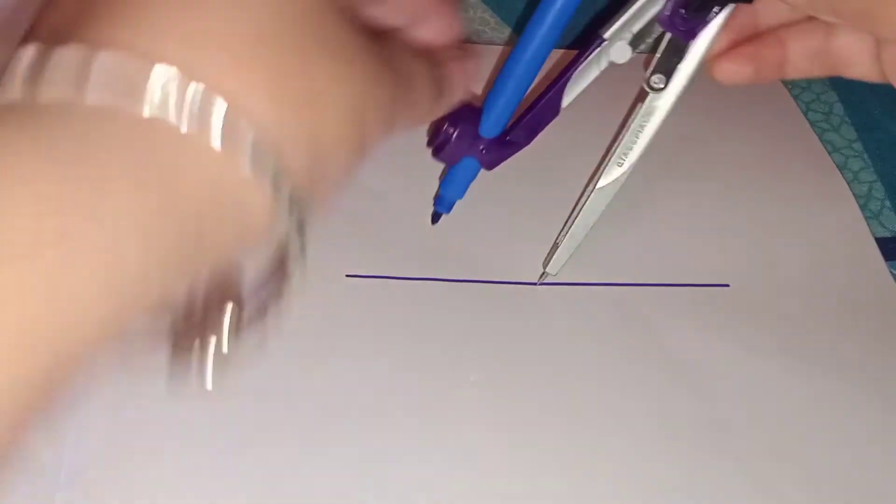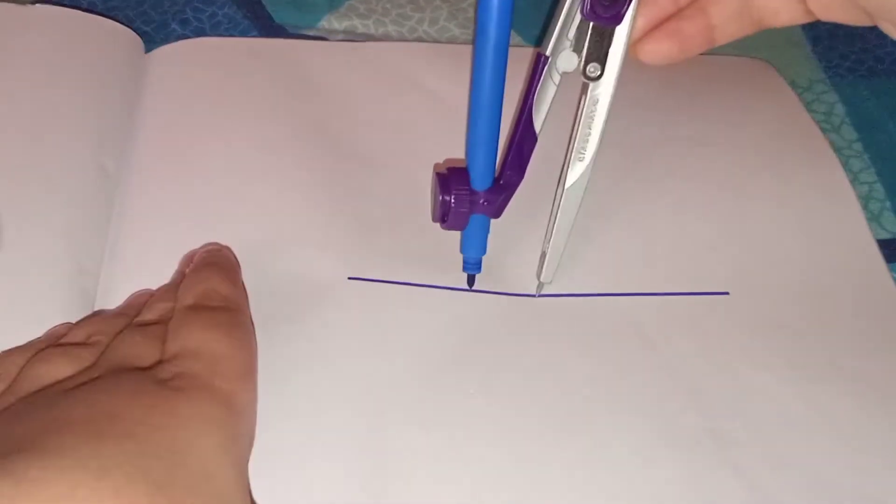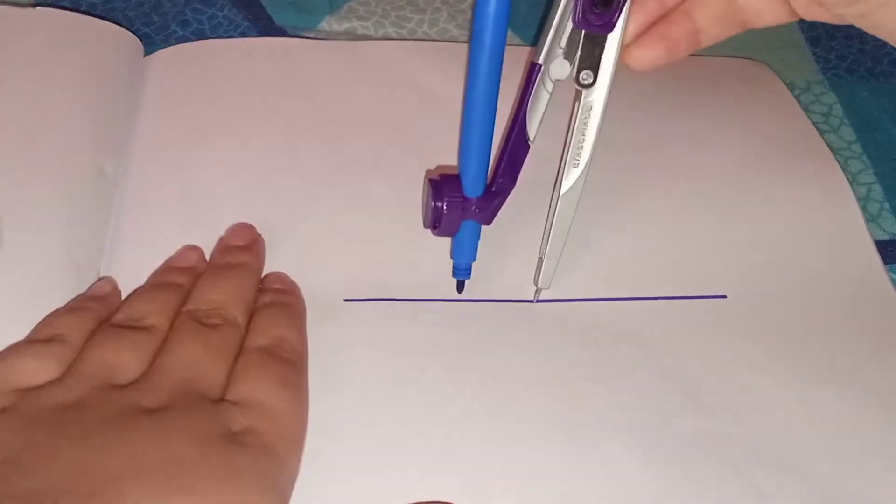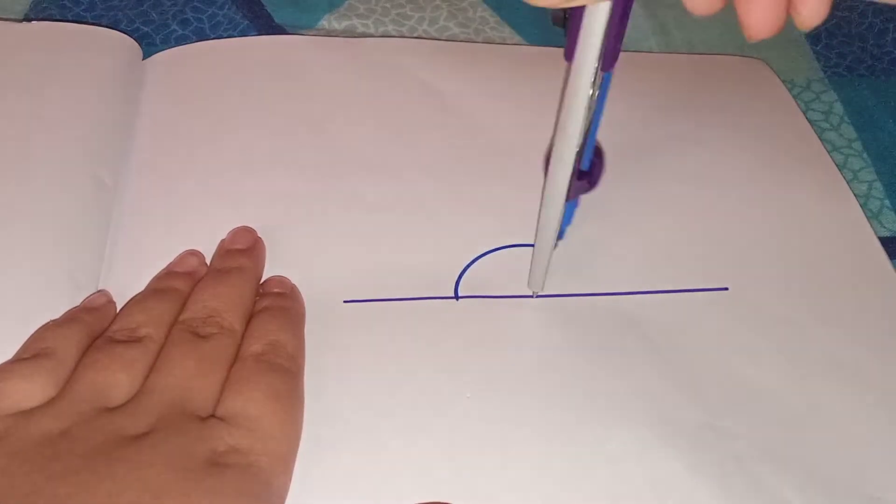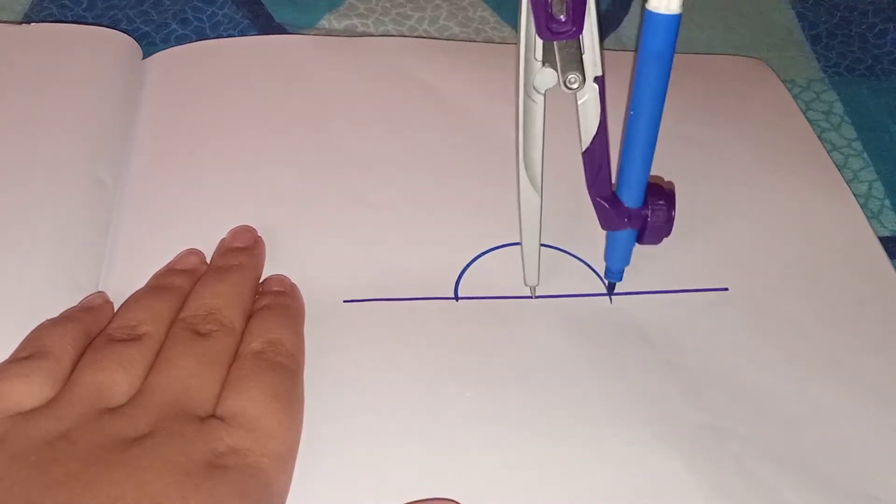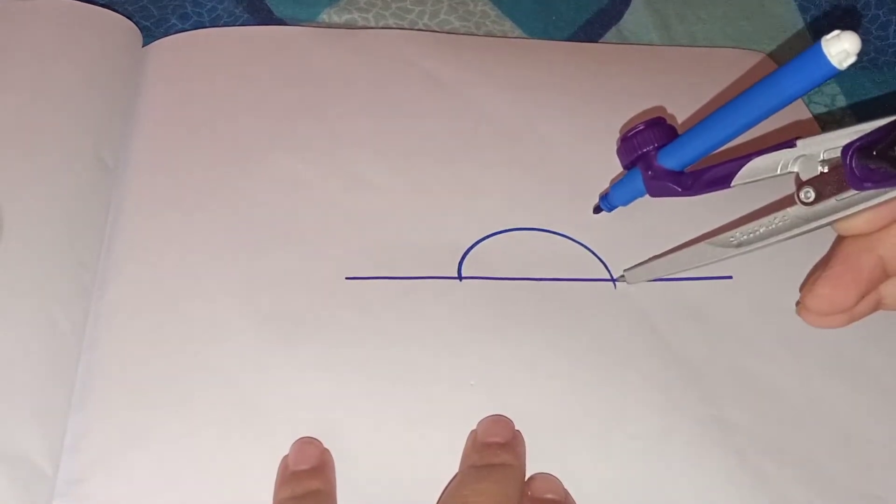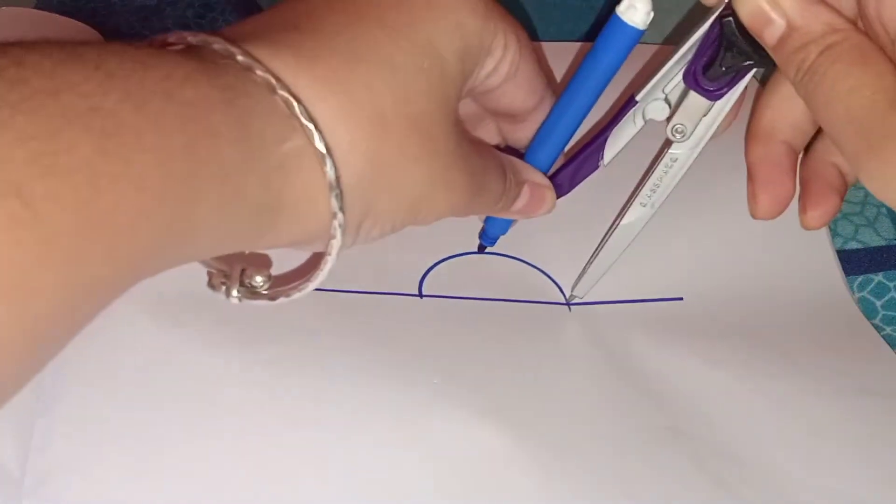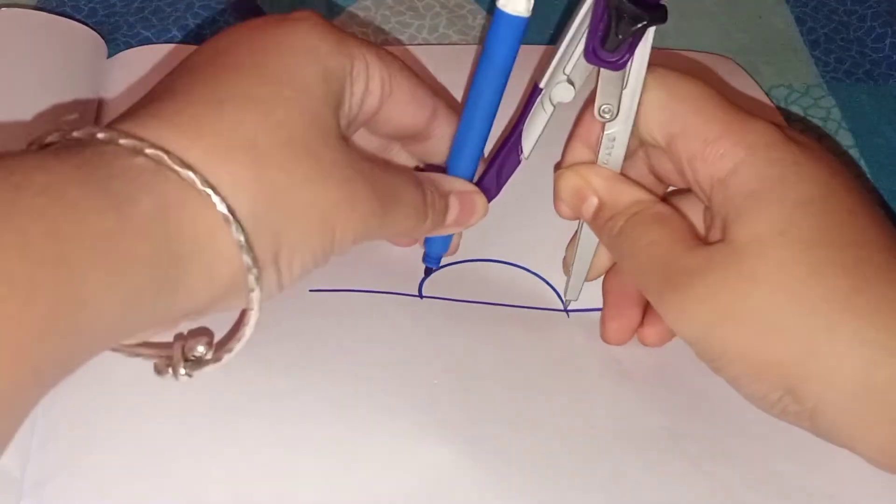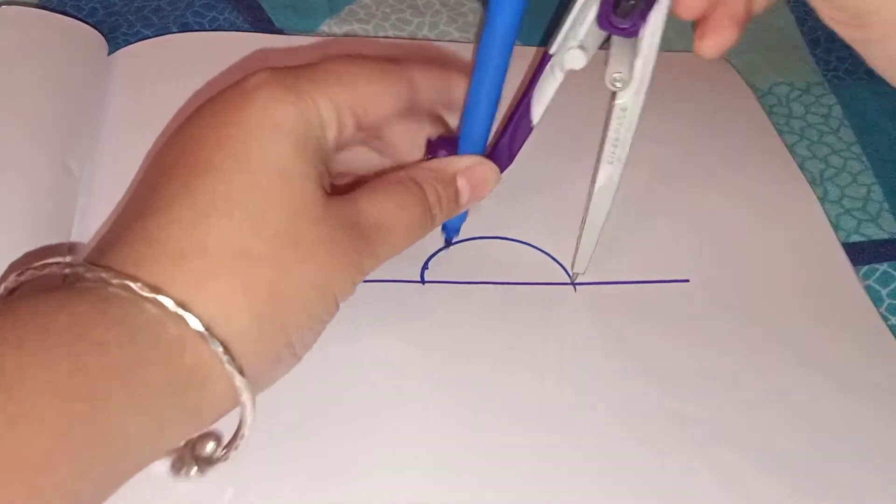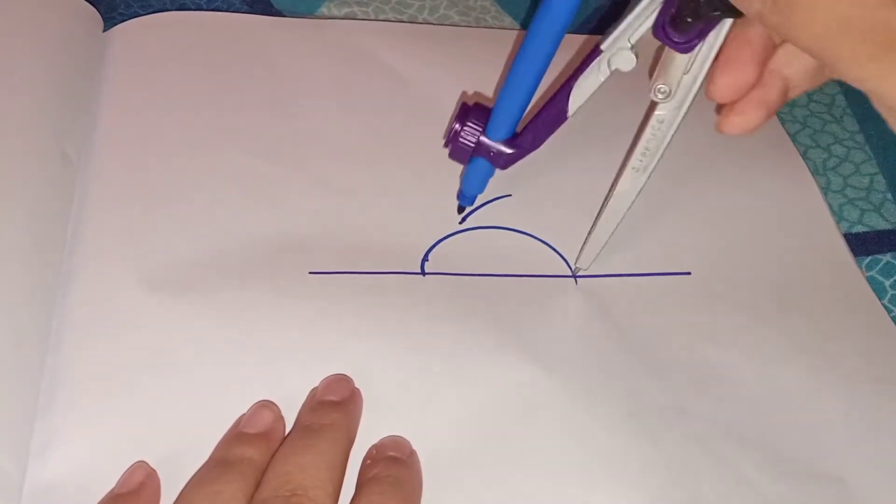Then take your compass, and from center with any convenient radius, draw an arc like this. Now with the two sides that are in the arc, draw, take more than half of the semicircle and cut two arcs from here and another from there.